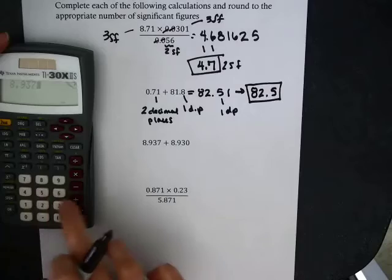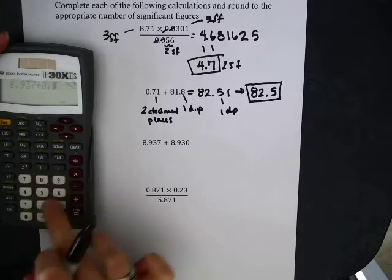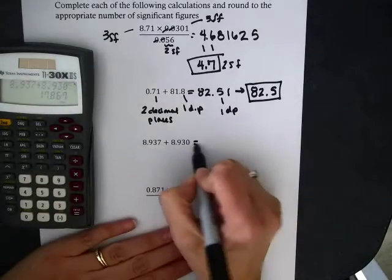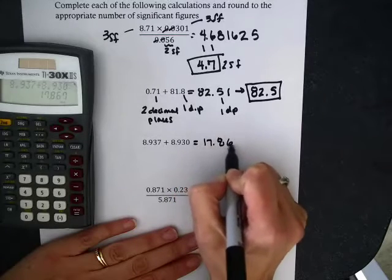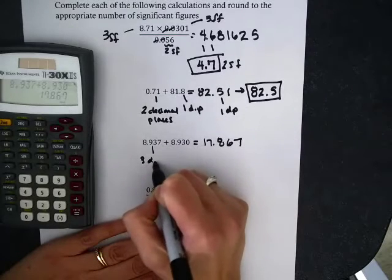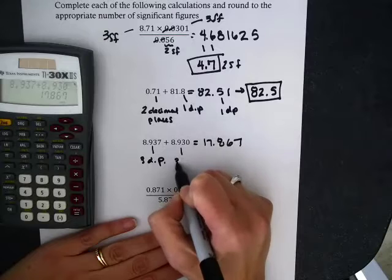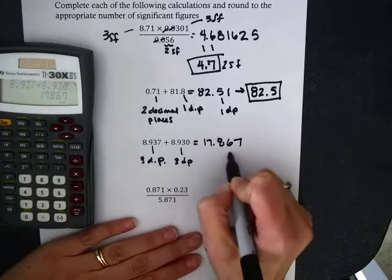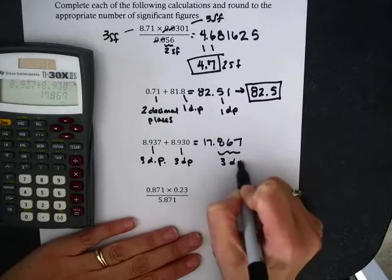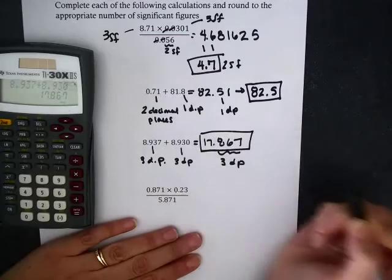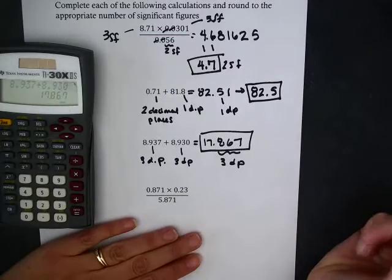All right, another addition one. 3 numbers after the decimal, 3 numbers after the decimal. I should have 3 numbers after the decimal. So I keep this whole thing. This is 5 significant figures, even though I only had 4 for input, but it doesn't matter for addition, only decimal places.